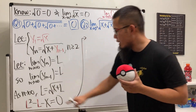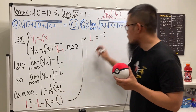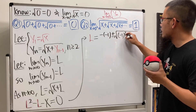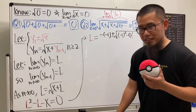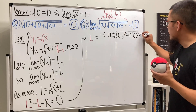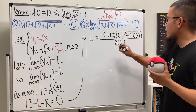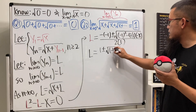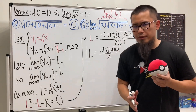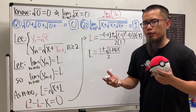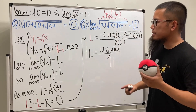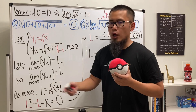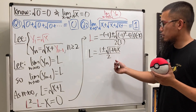Using the quadratic formula: L = (−(−1) ± √((−1)² − 4(1)(−x))) / (2·1) = (1 ± √(1 + 4x)) / 2. Now, do we take plus or minus? We must take plus, because y₁ = √x is always non-negative, so L must be non-negative. Since (1 + √(1+4x))/2 is greater than one for x > 0, the minus branch would give a negative value, which we must discard.